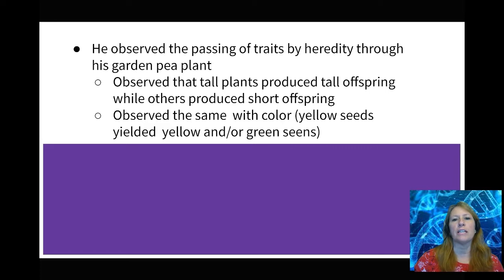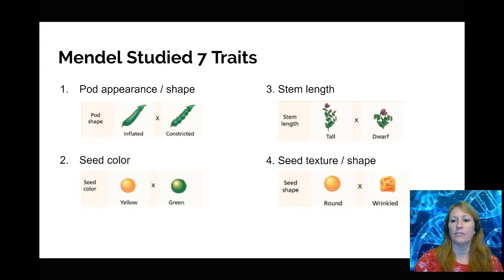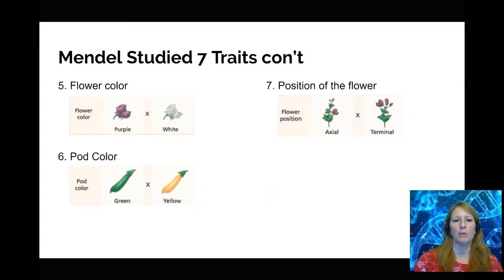He started to see that tall plants would not only produce offspring that were tall, but there would occasionally be some short plants. So he started looking at colors and height to determine where these traits were coming from. He looked at seven different traits: the shape of the pod — inflated or constricted — seed color yellow or green, and height — tall and short or dwarf.